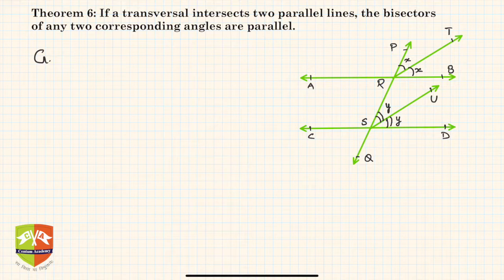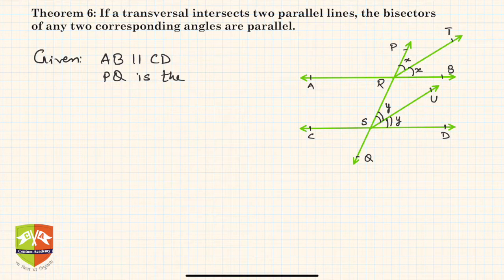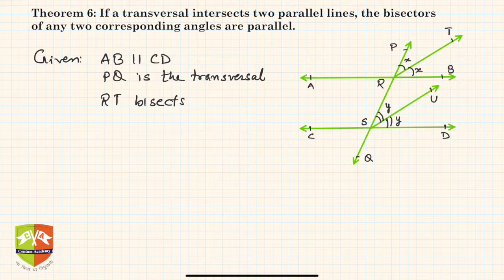What's given? Given is AB is parallel to CD, and PQ is the transversal. Lots of such transversals in the last three or four sessions - it's going to help us build our foundation. PQ is the transversal and RT bisects angle PRB.